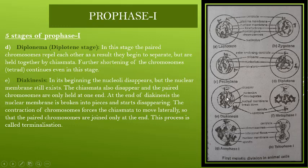The next stage is the last stage of Prophase 1, which is Diakinesis. Here the nucleolus will start to disappear. The nuclear membrane will also start to disappear. The contraction of chromosomes continues. The chromosomes start to undergo lateral movement, but they are still attached to one another through chiasmata. This movement is called terminalization.